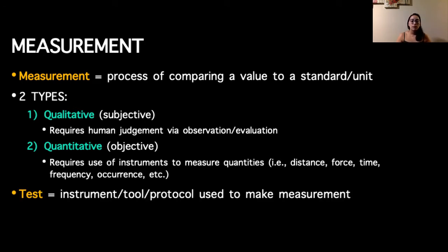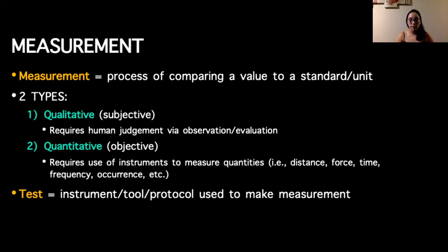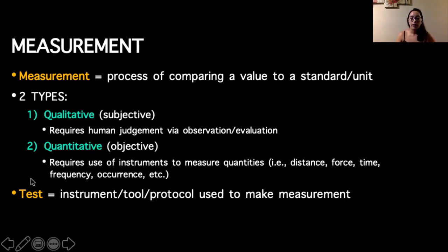Tests are instruments, tools, or protocols used to make a measurement. For example, if our measurement is VO2 max — milliliters of oxygen per kilogram per minute — a test we could use to gather that measurement might be the Bruce protocol. Another example: if we're collecting vertical jump height in inches, the jump height is the measurement, and the test is the means of collecting it. The subject might perform a counter movement jump or drop jump, and we might use a Vertec to measure their jump height. The type of jump and the tool together are both part of the test.